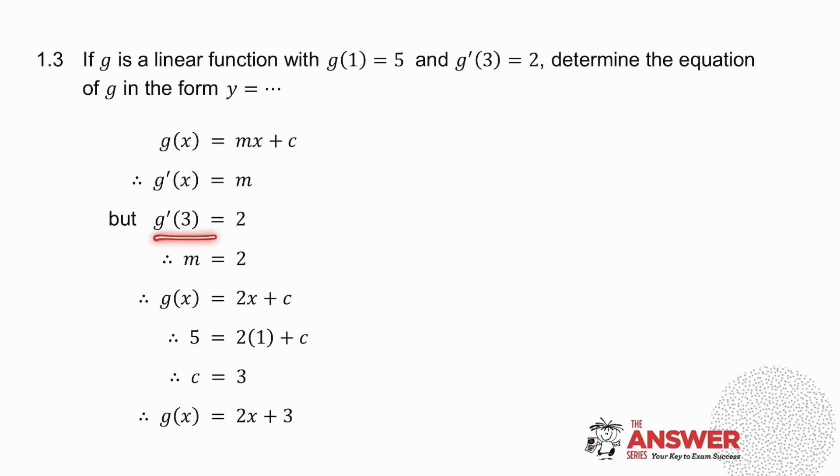So the derivative when x is 3 is 2 basically means that the gradient of my straight line is 2, so my m value is 2. So I've got g(x) equals 2x plus c. They told me that g(1) is 5, in other words when x is 1, y is 5. So in place of x goes 1, in place of y goes 5. I solve for c and there I've got the equation of g(x).